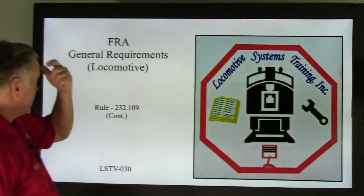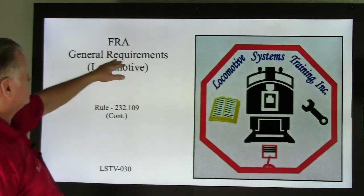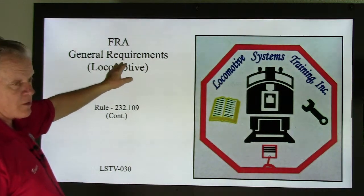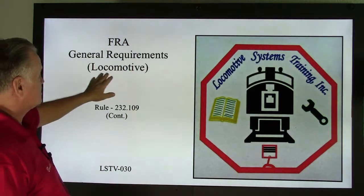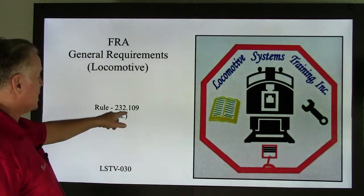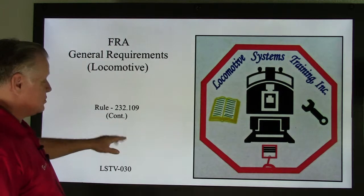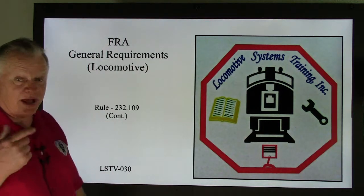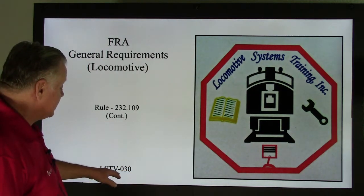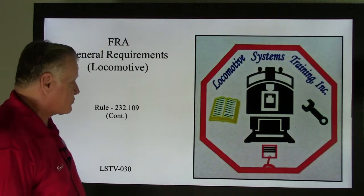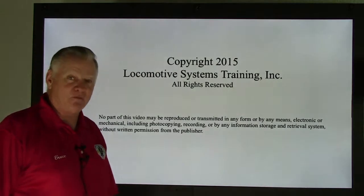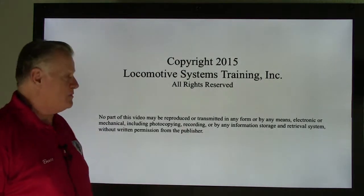We're continuing on with the FRA — Federal Railroad Administration, General Requirements, Locomotive Rule 232.109. This is continued from the last video because it was so long. This is LSTV-030, video number 30 already. Time flies when you're having fun.